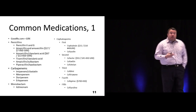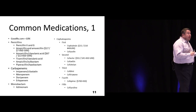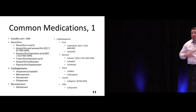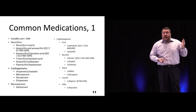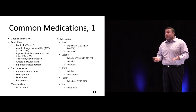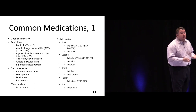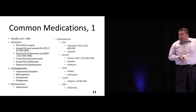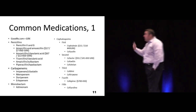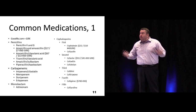GoodRx is a really useful tool, especially for patients without prescription coverage. Download the app, enter the medication, and it shows nearby pharmacies and costs — the difference can be significant, like $40 at one pharmacy versus $120 at another. Penicillins come in many forms, some alone and some in combination.